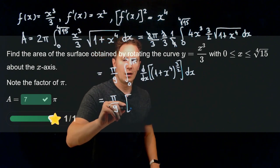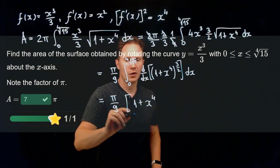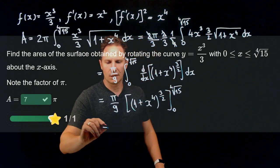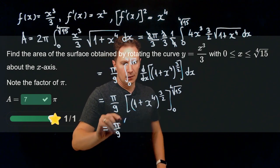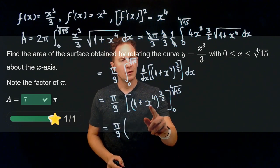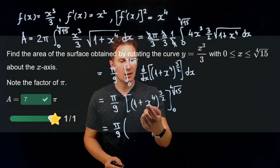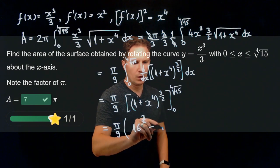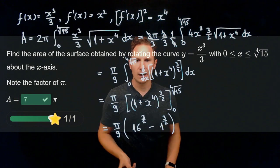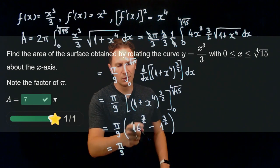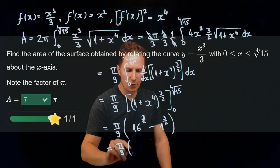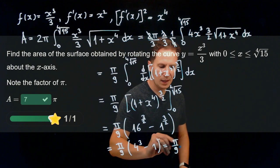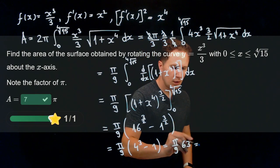The Fundamental Theorem of Calculus tells us this is just the net change of the antiderivative (1 + x⁴)^(3/2) as x goes from 0 to ⁴√15. Therefore we get π/9 times: the fourth root of 15 raised to the fourth power is 15, so 15 + 1 = 16 raised to the 3/2. From this we subtract the value at x = 0, which is 1 raised to the 3/2. Computing: 16^(1/2) = 4, so 4³ = 64, minus 1 is 63 = 9 × 7, giving us 7π. I hope you enjoyed this video and I'll see you in the next one.